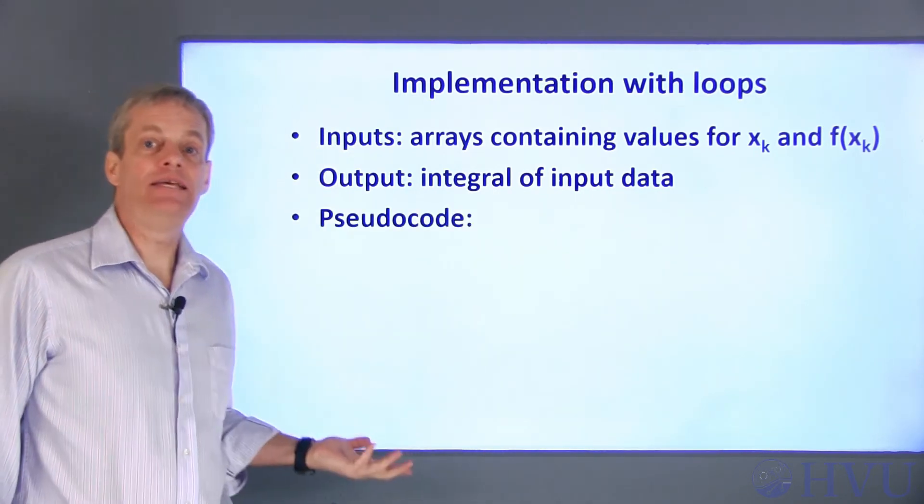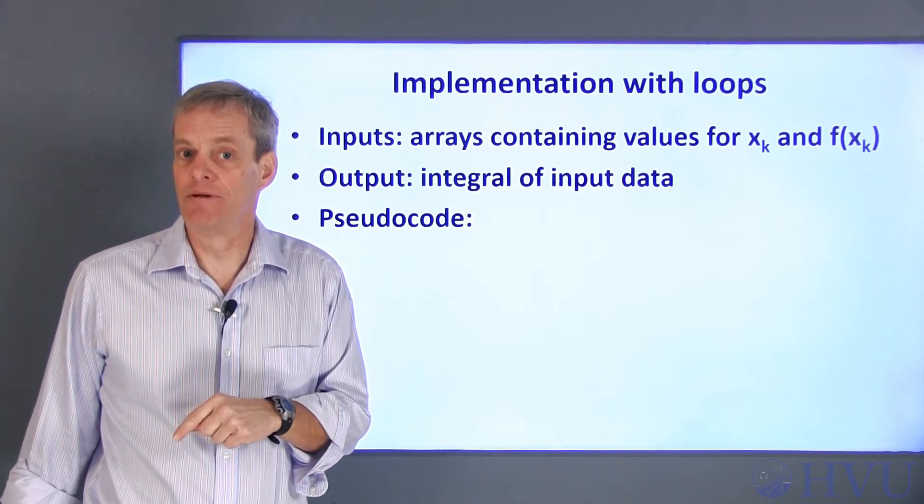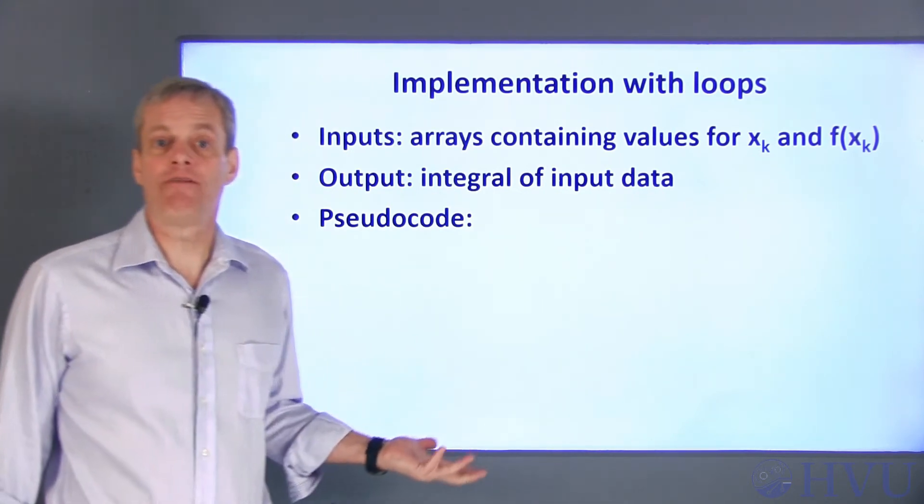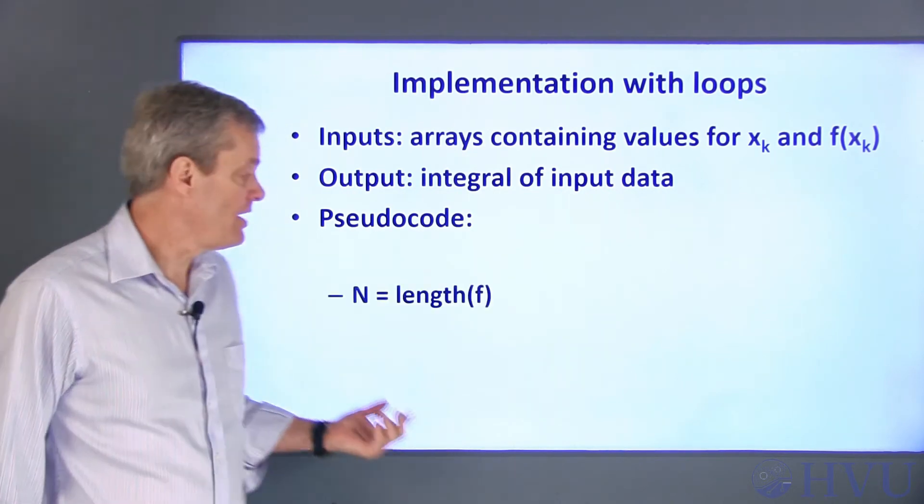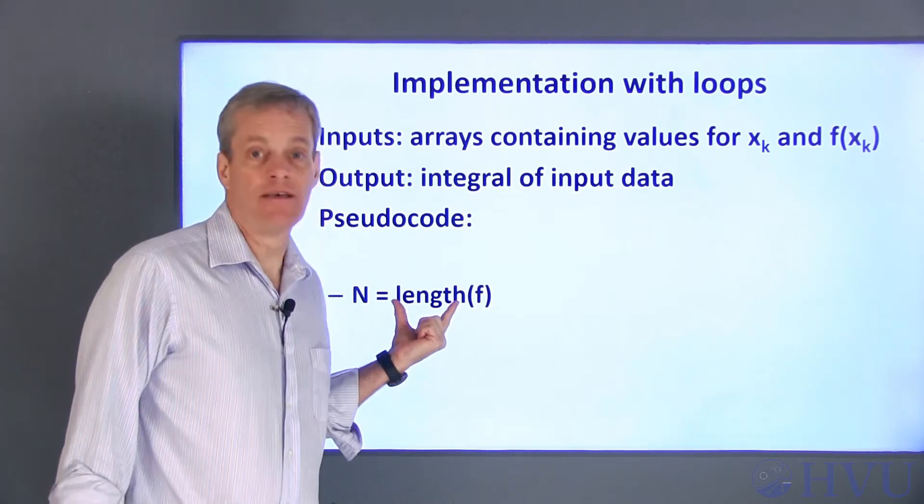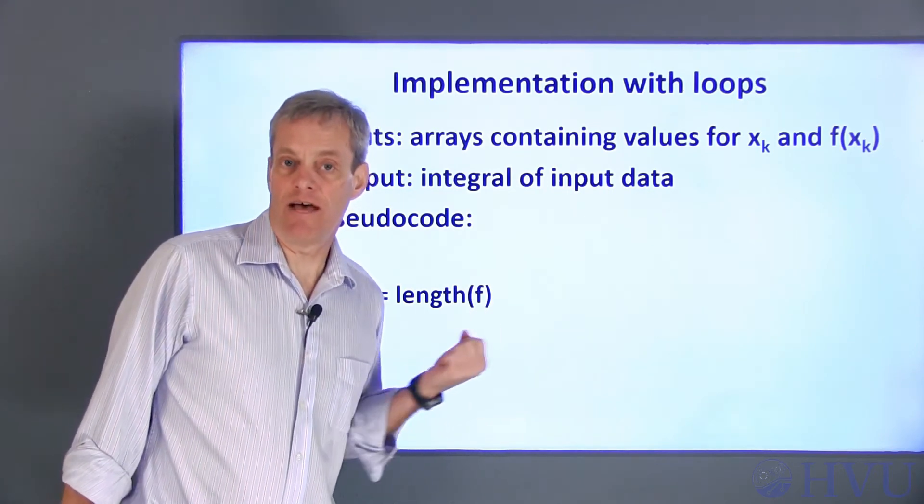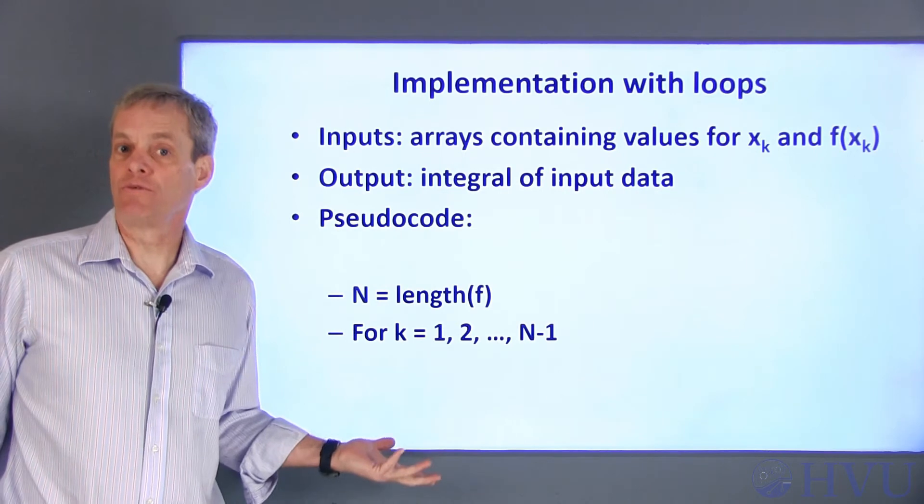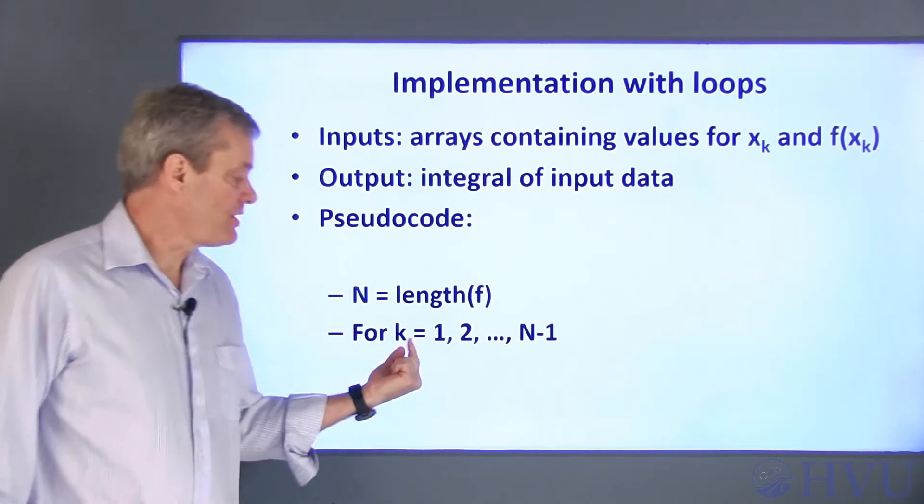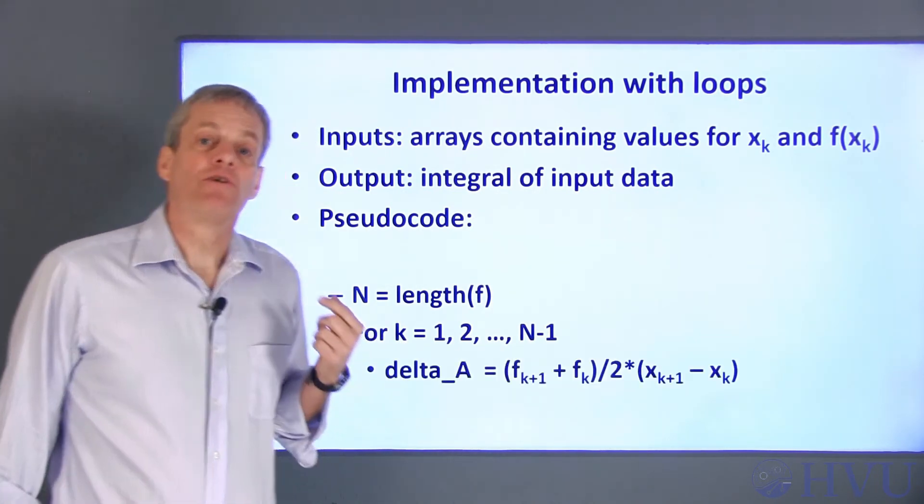Now I'll create some pseudocode. I need to calculate areas for all the subintervals and then add all those areas up. If there are n data points, this results in n-1 subintervals, so I'll have to go through my loop n-1 times. n is just the number of data points that I have, so I can calculate it as the length of either the x or the f vector. I'll arbitrarily base it on the length of f. I know how many times I'm going to go through the loop, so a for loop is probably easier than a while loop.